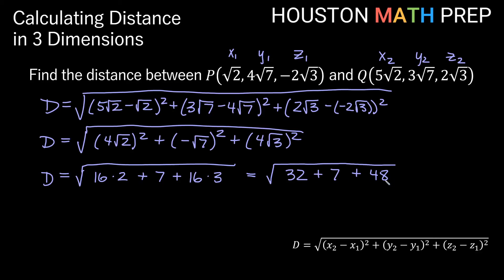And so now here that's going to give us the square root of 32 plus 7 plus 48. And let's see, 32 plus 48 is 80. If we add the 7, then that's going to give us the square root of 87.